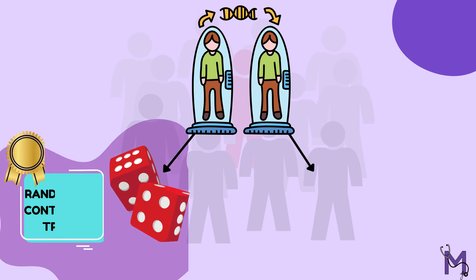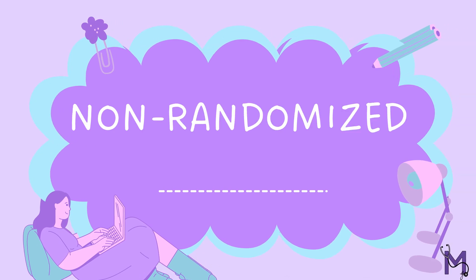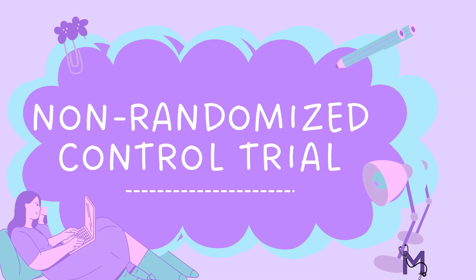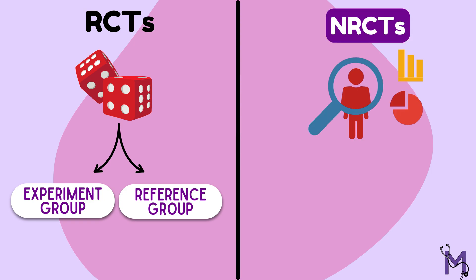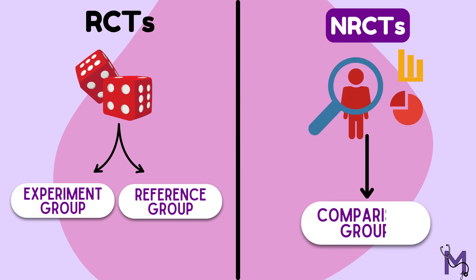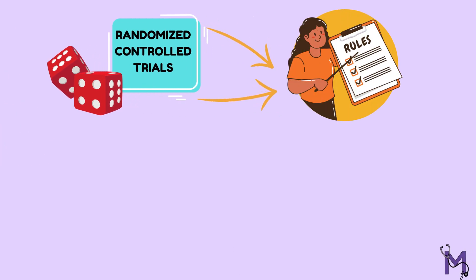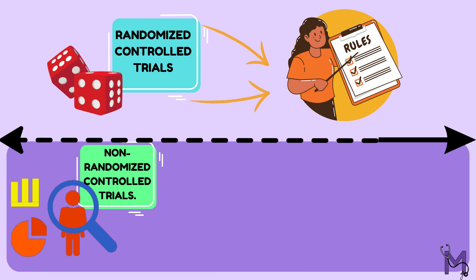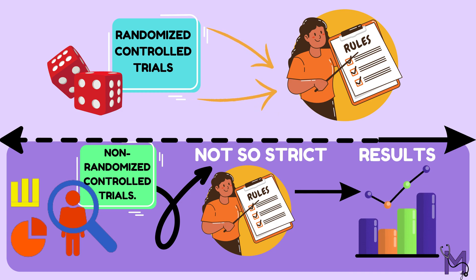Human trials can be conducted either through randomized control trials or through non-randomized control trials, or NRCTs. Having discussed the randomized trials previously, in today's video we will discuss the non-randomized trials. Unlike randomized trials, these do not randomly assign participants to reference or experimental groups, but instead use other methods to create comparison groups. In non-randomized control trials, we are not following strict randomization rules for practical purposes, but not so much that our results become unclear.